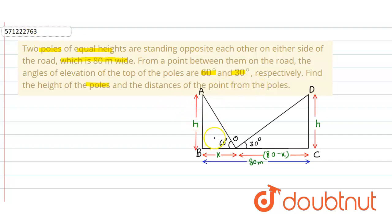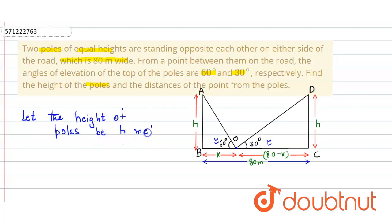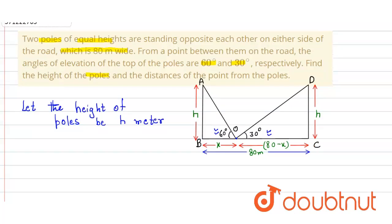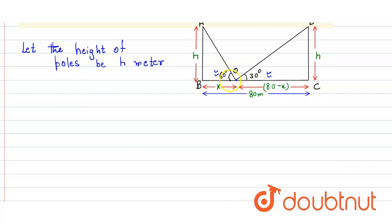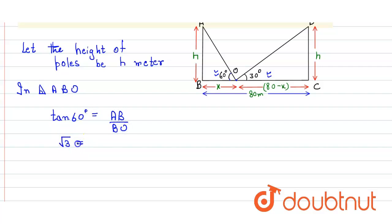As you can see in the given figure, the angle of elevation is 60 degrees and 30 degrees from a point, let it be O, and we have considered the height of the poles equal to H. Let the height of poles be H meters — both poles are equal — and O is the point where the angle of elevation is given. Distance BO is equal to X, so OC will be 80 minus X. Applying the trigonometric ratio in right angle triangle ABO: tan60° equals AB upon BO, so √3 equals H divided by X. From here we get H equals √3 X. We consider this to be equation number one.